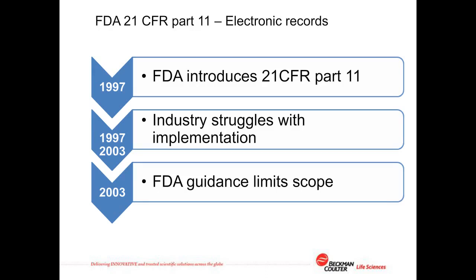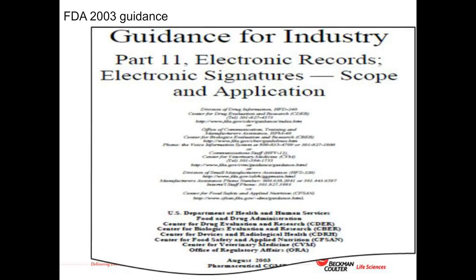The FDA realized that the pharmaceutical industry were taking their guidance as all-encompassing and, recognizing the need for clarity, they issued further guidance back in 2003. This effectively limited the scope of the 21 CFR Part 11 ruling to those records that are either directly covered by the FDA regulations or those that are submitted to the FDA under the Federal Food and Drug Cosmetic Act of 1938 and the Public Health Service Act of 1944. The FDA's 2003 document provided detailed descriptions of those records where 21 CFR Part 11 should be strictly applied, and it dispelled some common misconceptions that may surprise you.